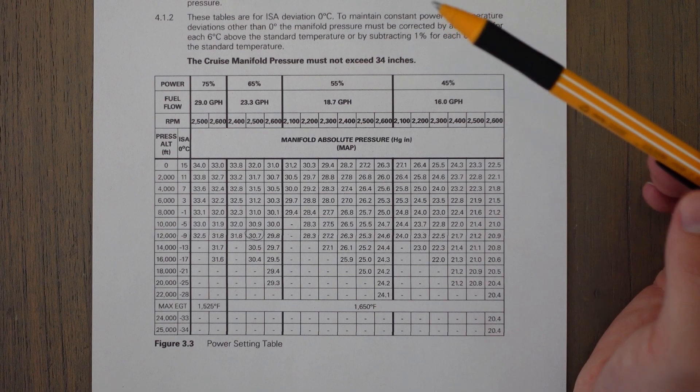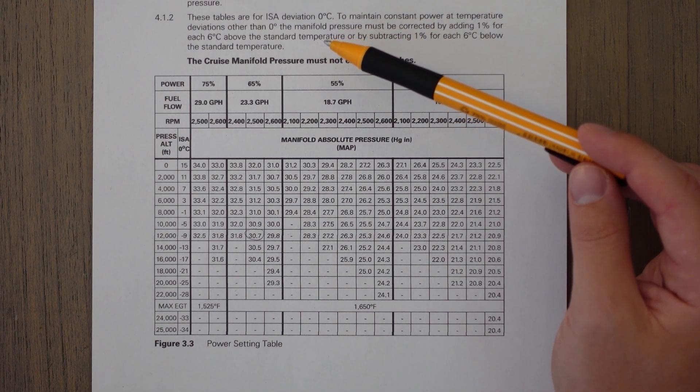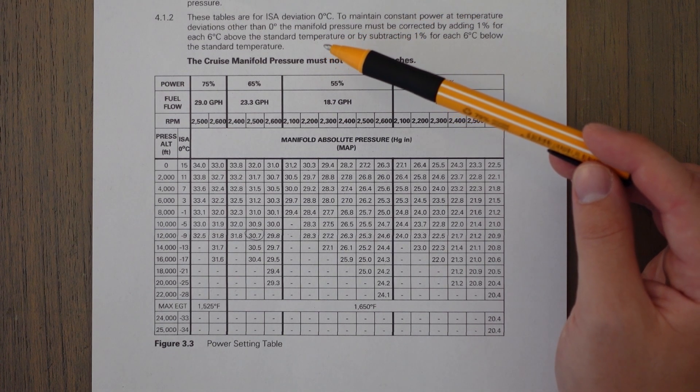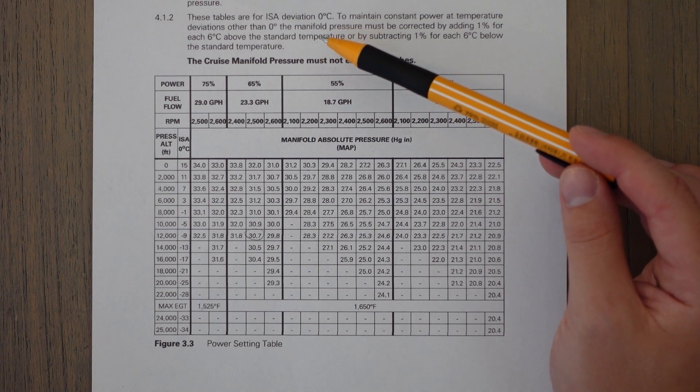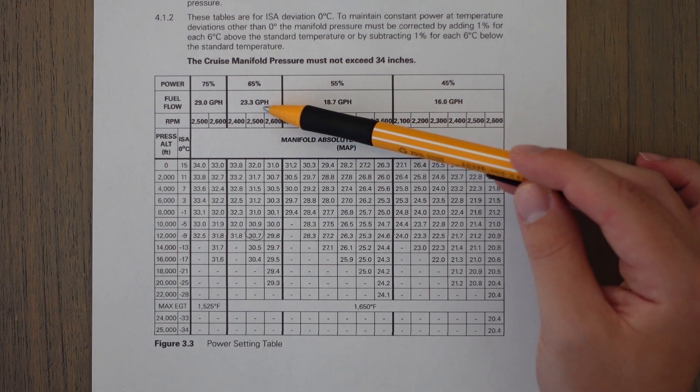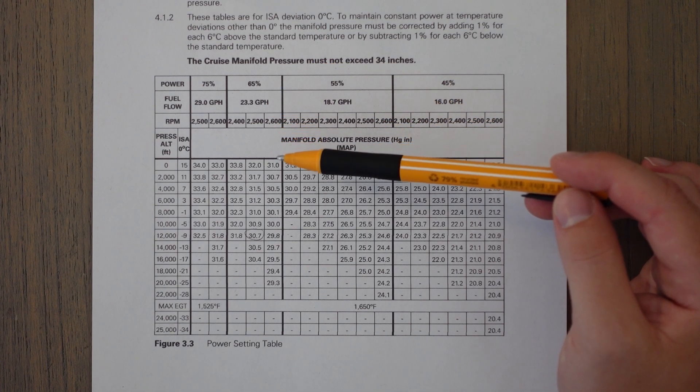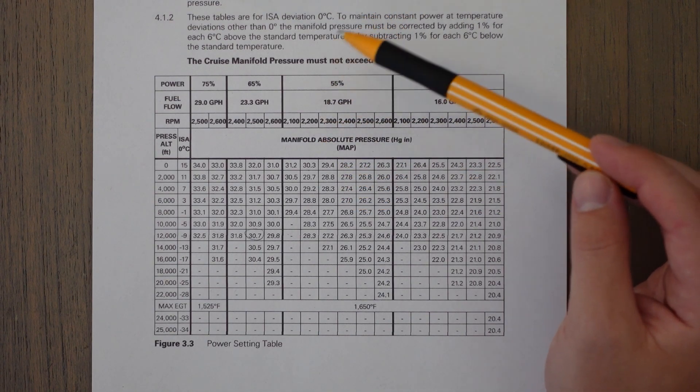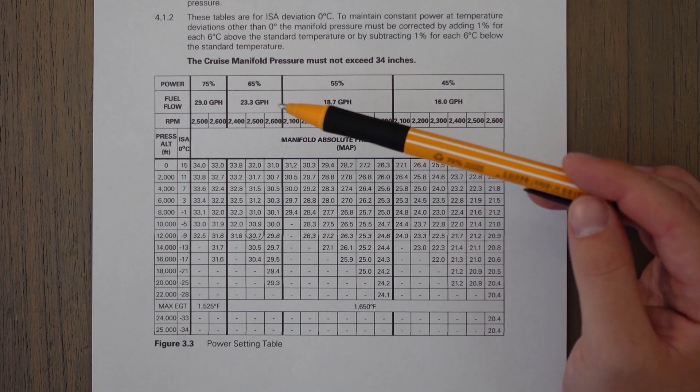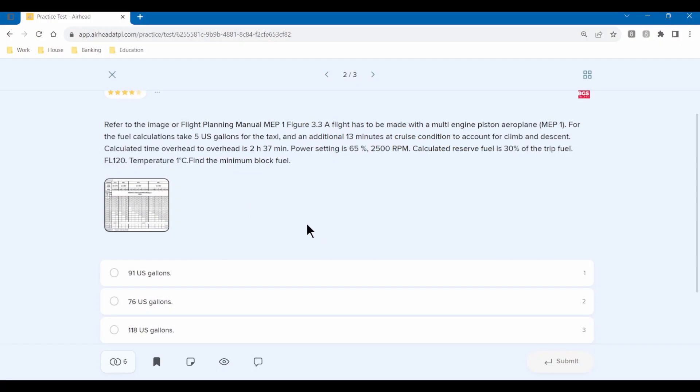In the notes at the top, it says about correcting the manifold pressure—that's basically what the 1 degree part of the question is talking about. But we don't even need to bother with manifold pressure. We're just interested in the fuel flow per hour, which is 23.3 gallons per hour. But again, an example of what is that information for? Look at the notes and you should be able to figure out why they've given you that little extra bit of information.